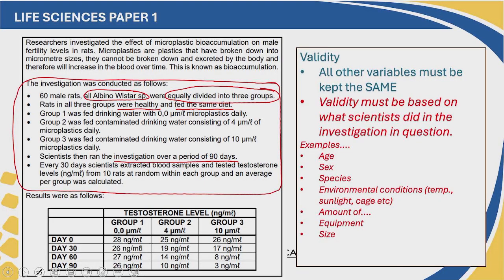Some examples of factors to consider for validity are: keeping the age the same, keeping the sex the same, the same species, the environmental conditions such as temperature, sunlight, and the cage, keeping the amount of what is measured or given the same, keeping the equipment the same, and keeping size the same — the size of the rats, the size of the cage. These may differ according to your investigation. When we read the investigation we need to apply these examples. Let's practice that.